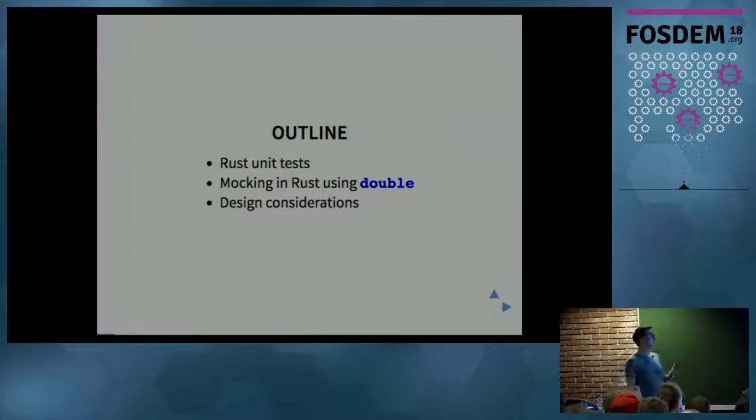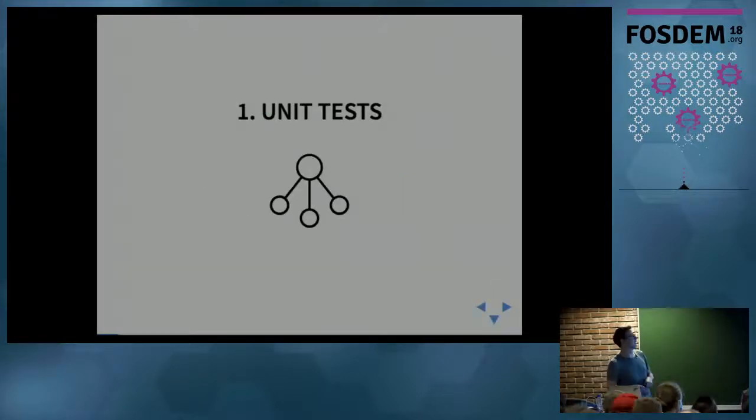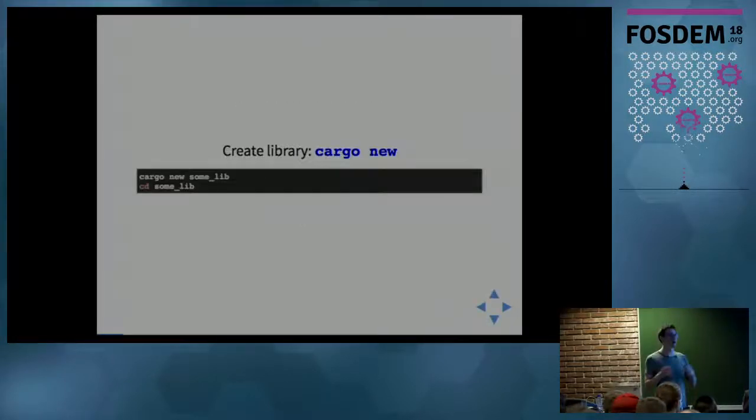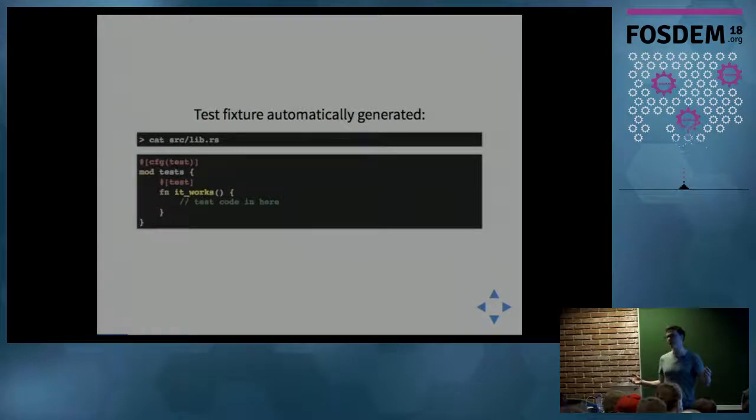So unit tests. For those of you who haven't wrote any Rust before, you create a library with Rust's package management tool Cargo. When you create a library, for example, some lib, it generates a single source file, and this contains an empty test case.